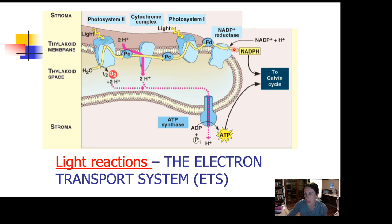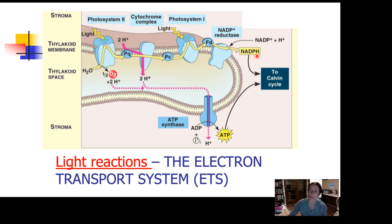Eventually, when the electrons get to the end of the bucket chain right here, a molecule comes along and picks them up. And that molecule is called NADP+. You're going to think of NADP+ as a taxi — it's a taxi that carries electrons where they need to go. NADP+ is the empty taxi; it has no passengers in it. When it picks up the electrons, the electrons are its passengers, and now it's called NADPH. This is a full taxi. It's a molecule full of high-energy electrons, and it's going to take those electrons where they need to go, which is the Calvin cycle — the next part of photosynthesis.